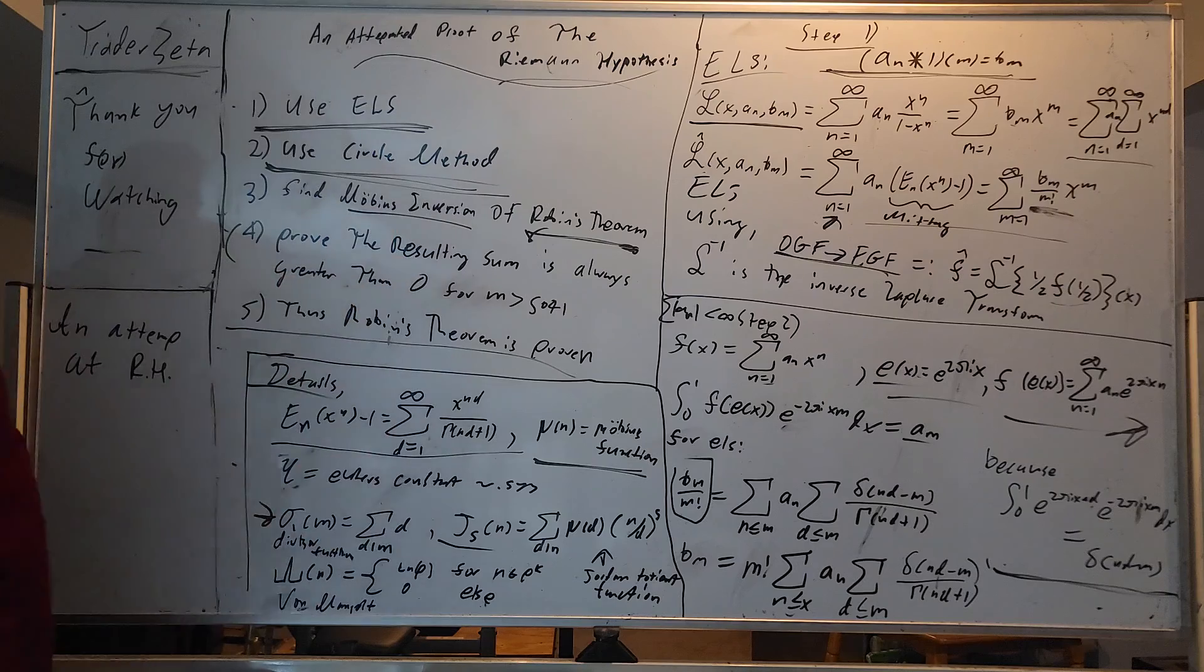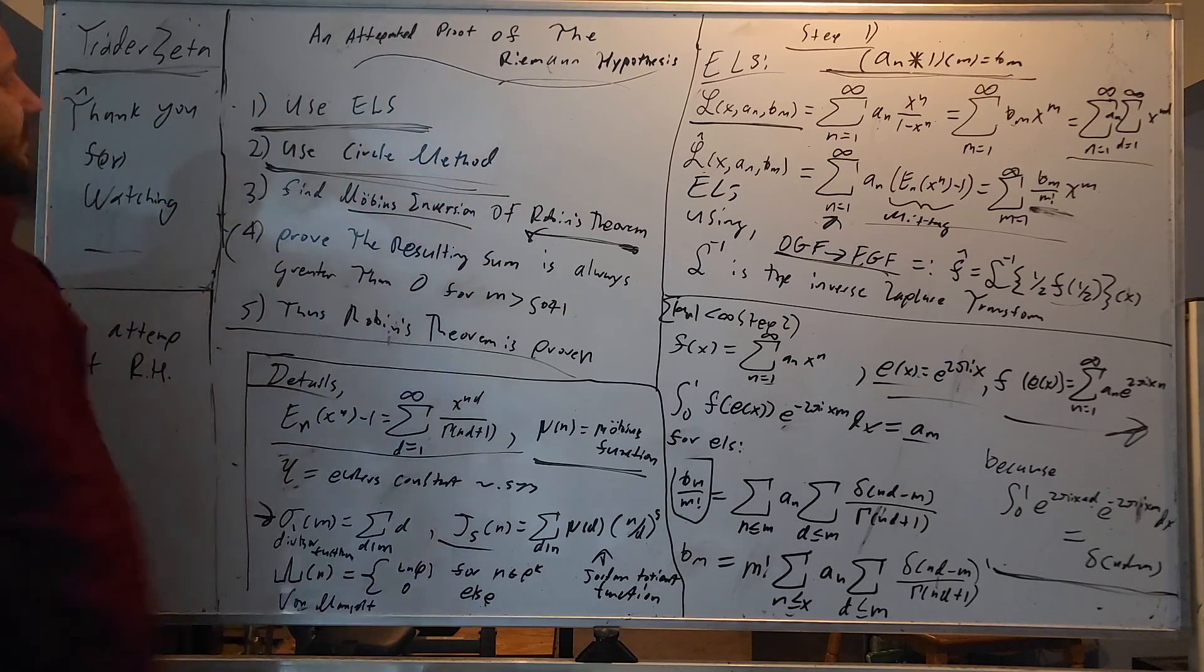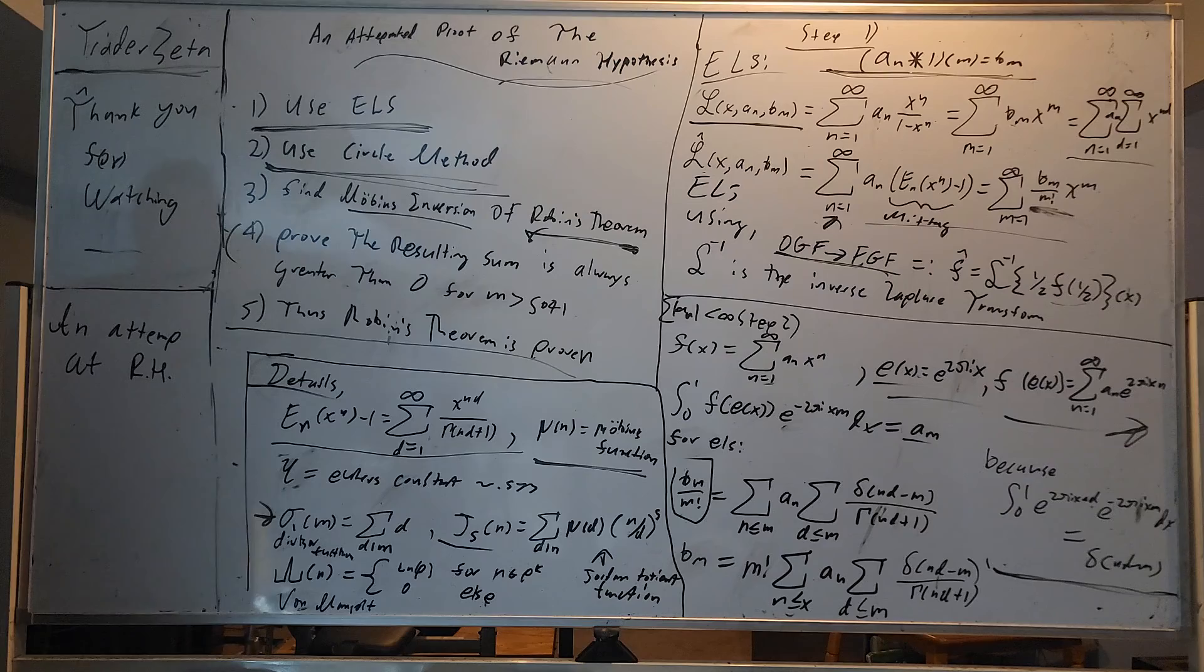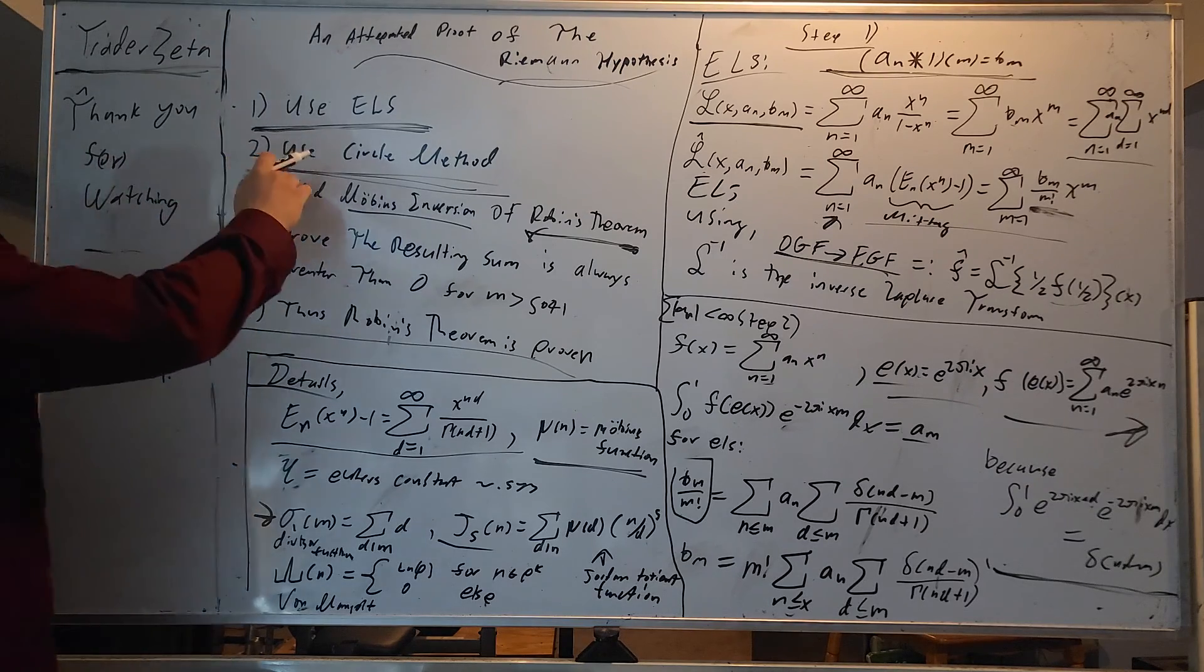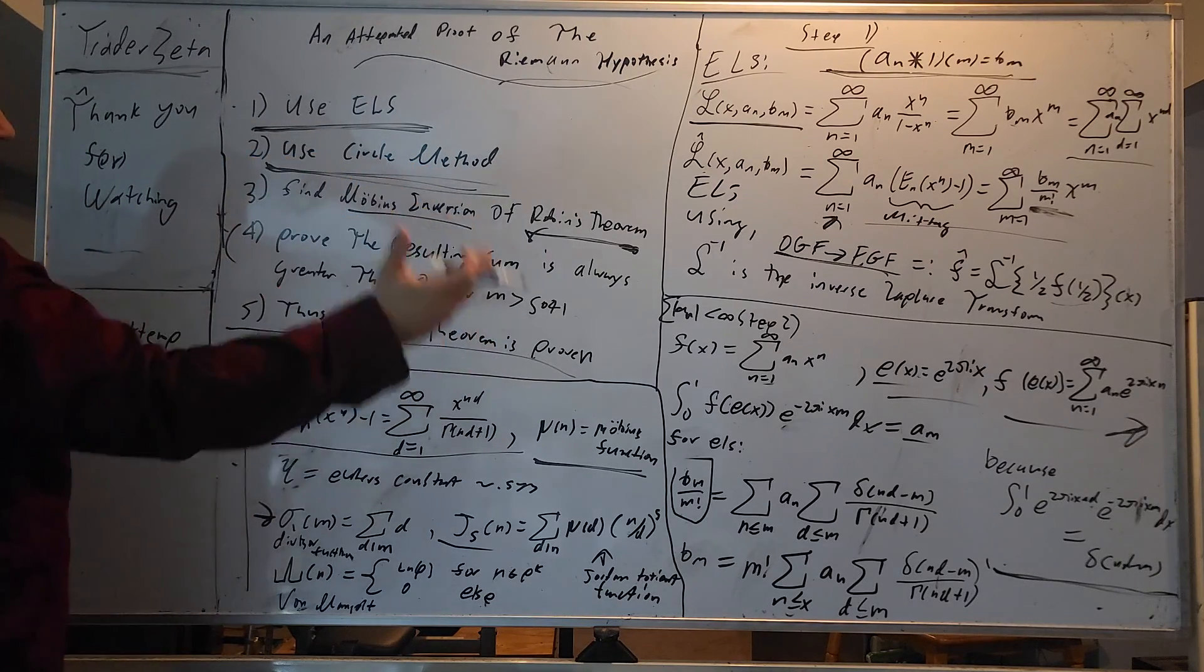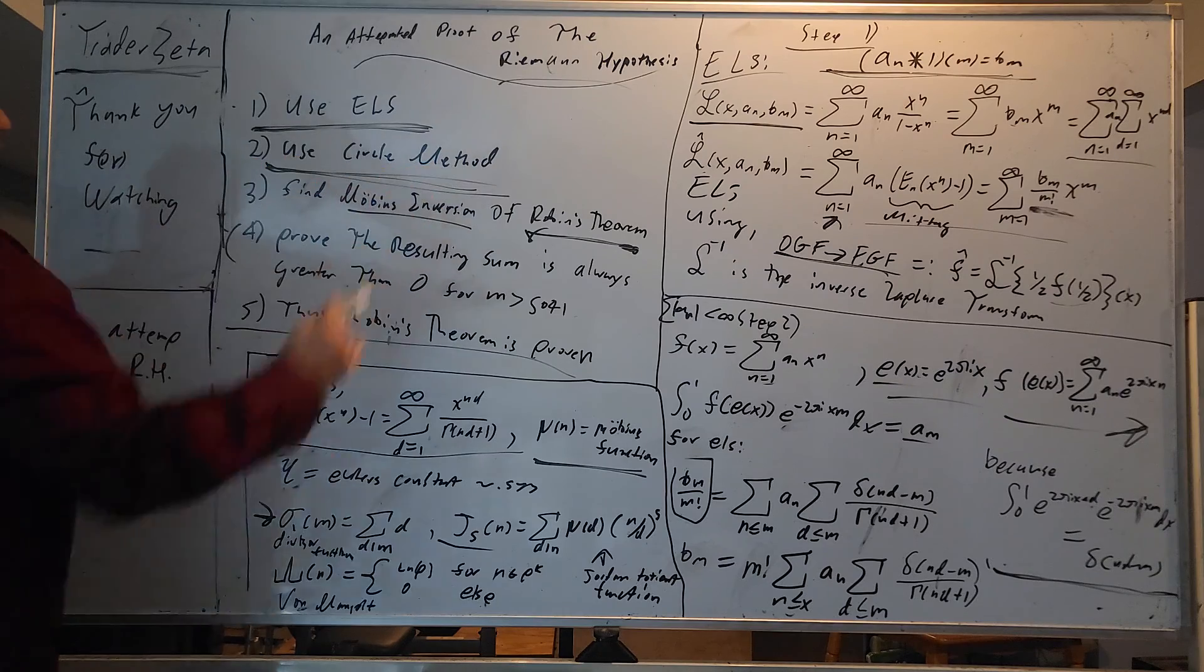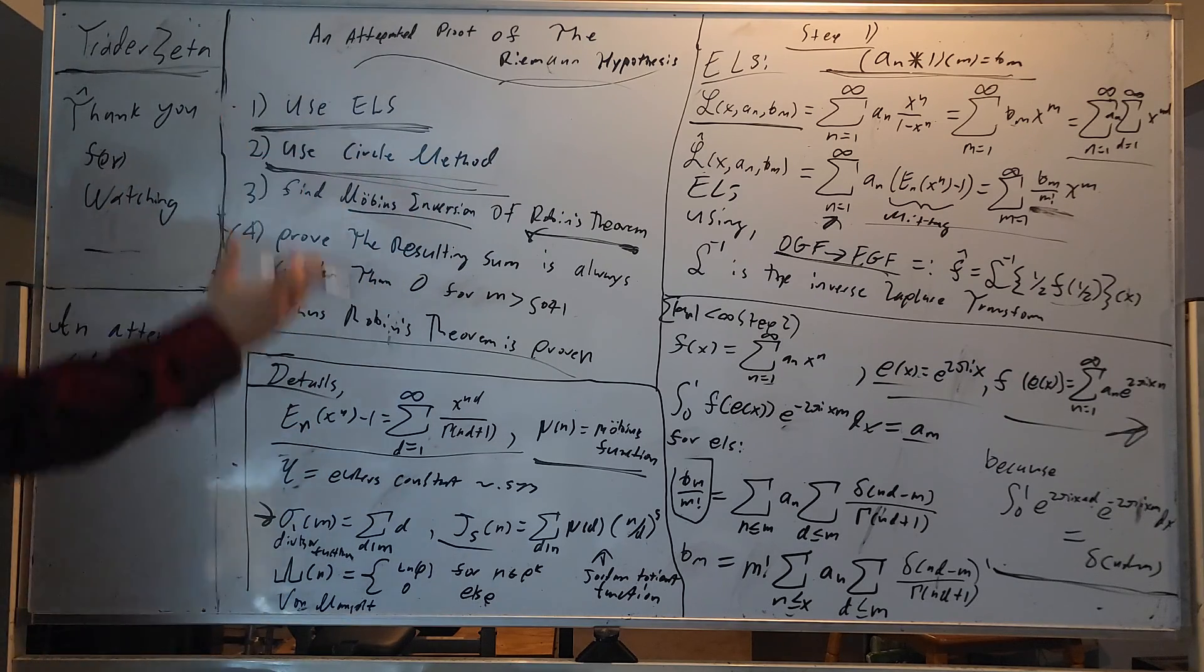The outline of the proof is as follows. One, we are going to use and derive the exponential Lambert series. Two, we are going to restate and give an overview of the circle method, and apply it to the exponential Lambert series.